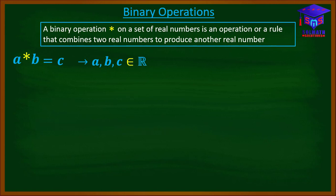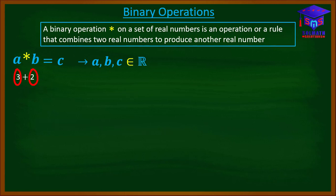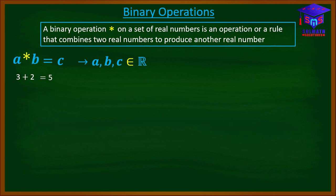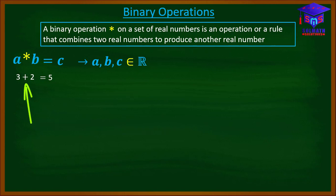For example, if you have three plus two, the two real numbers are three and two, and then we are combining them with the addition operation to get five, which is also a real number. So in this case, our binary operation is addition.